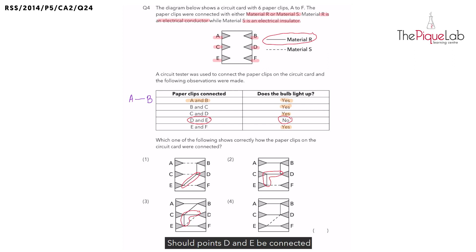Remember the solid line is material R which is a conductor of electricity. Should points D and E be connected with a conductor of electricity? No, it should not be. Let's write that down first.